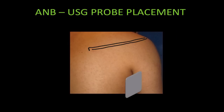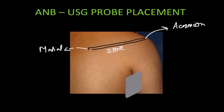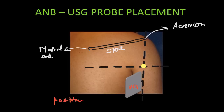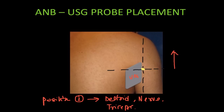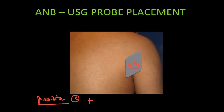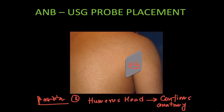On a patient, identify the spine of the scapula — the lateral end, the acromion, is important. Dropping a vertical line through the acromion process demarcates the line along which the probe needs to be moved. Also note that the top of the axillary fold demarcates the horizontal level where the axillary nerve will lie. In position one along this line we would see triceps first. Moving the probe cranially to position two, we would be able to see the axillary nerve under the fibers of deltoid. Moving the probe more proximally to position three, the curvature of the humeral head comes into view, confirming the anatomy.